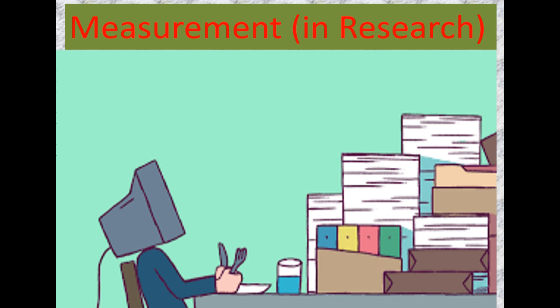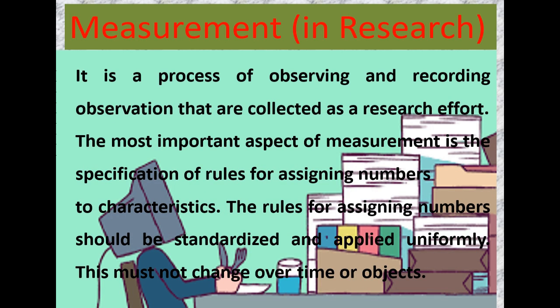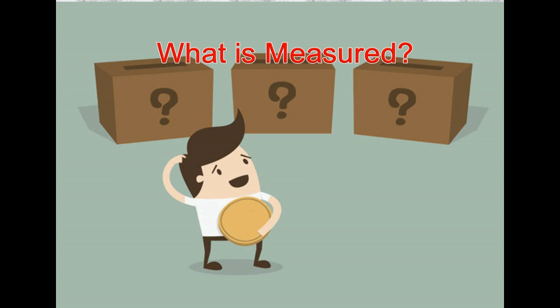Measurement in research is a process of observing and recording observations that are collected as part of a research effort. The most important aspect of measurement is the specification of rules for assigning numbers to characteristics. These rules should be standardized, applied uniformly, and must not change over time or across objects.